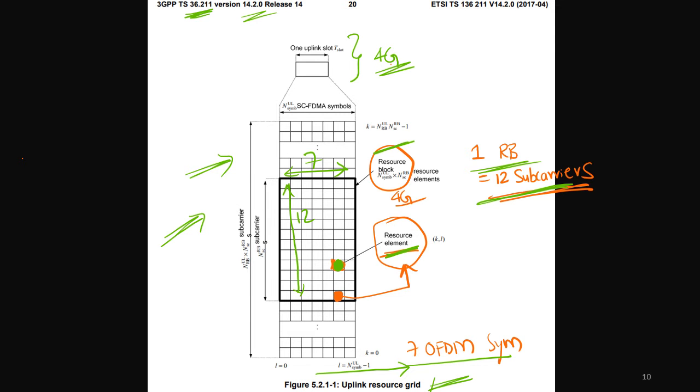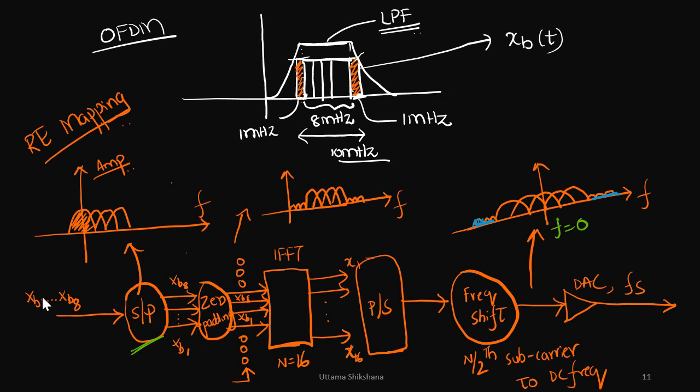So I hope this OFDM grid concept or the resource grid concept is very clear. One more thing what I want to mention is, each of these subcarriers are also known as resource elements. Whatever the mapping at serial to parallel converter we are doing, it is also called as subcarrier mapping or resource element mapping, or in our general terms it is called as RE mapping.